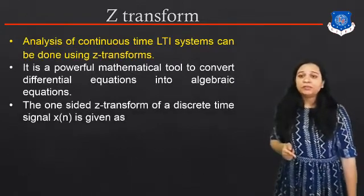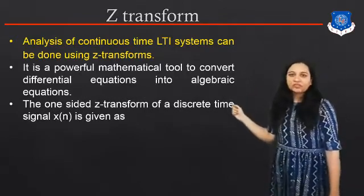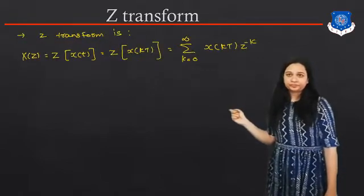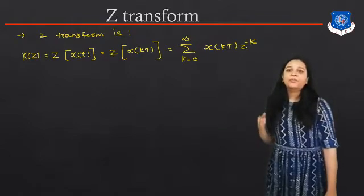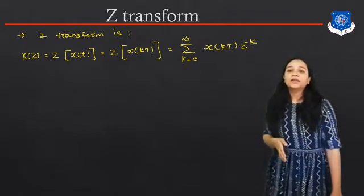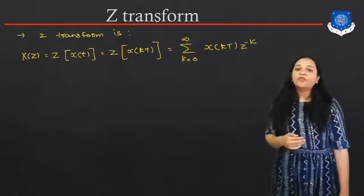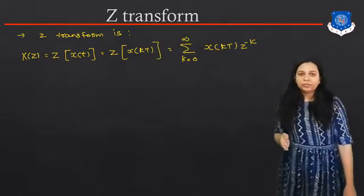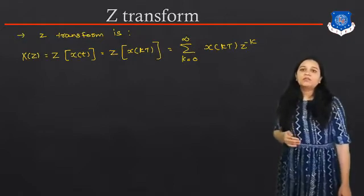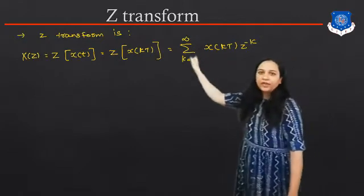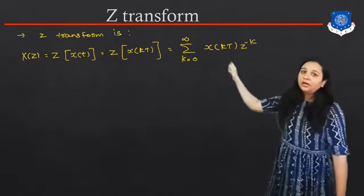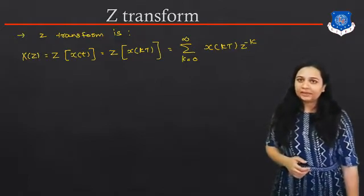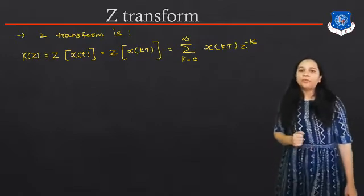The one-sided Z-Transform of the discrete signal X(N) is given as: X(Z) = Z{X(T)}, which equals the summation from K = 0 to infinite of X(KT) · Z raised to minus K. This is the formula for X(Z).